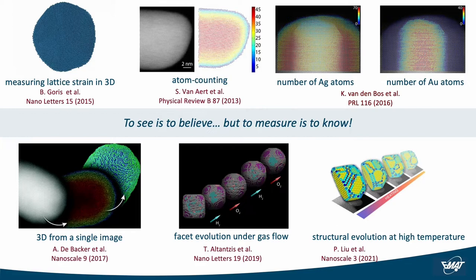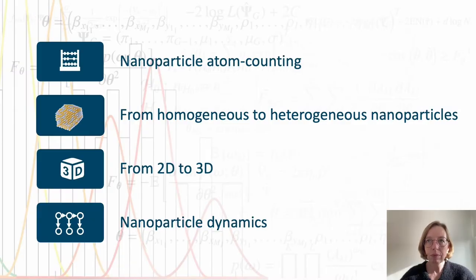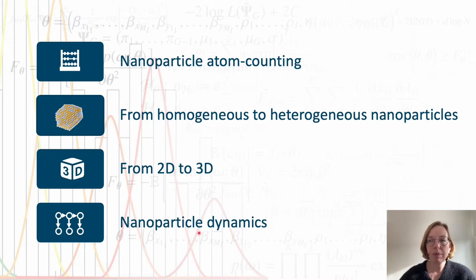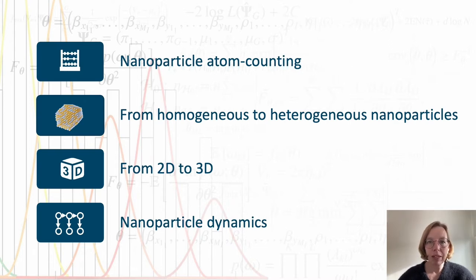I will come back to these and other examples later in this presentation. I will first explain how we count the number of atoms along the viewing direction and how we add confidence levels to the results. Then I will come to recent progress to extend the method to materials consisting of more than one atom type. Next, we will see how atom counts can be used to extract the 3D atomic structure, and finally I will introduce a method to track 3D structural changes over time using a so-called hidden Markov model.